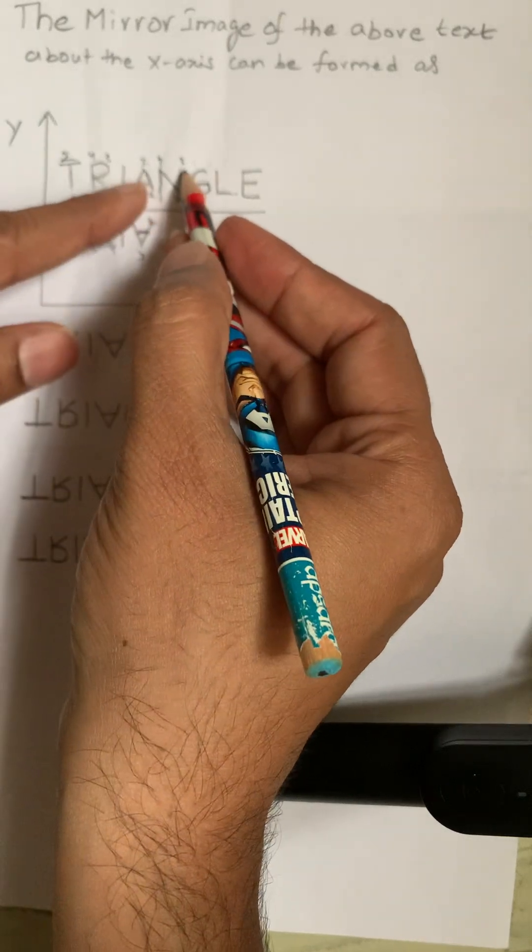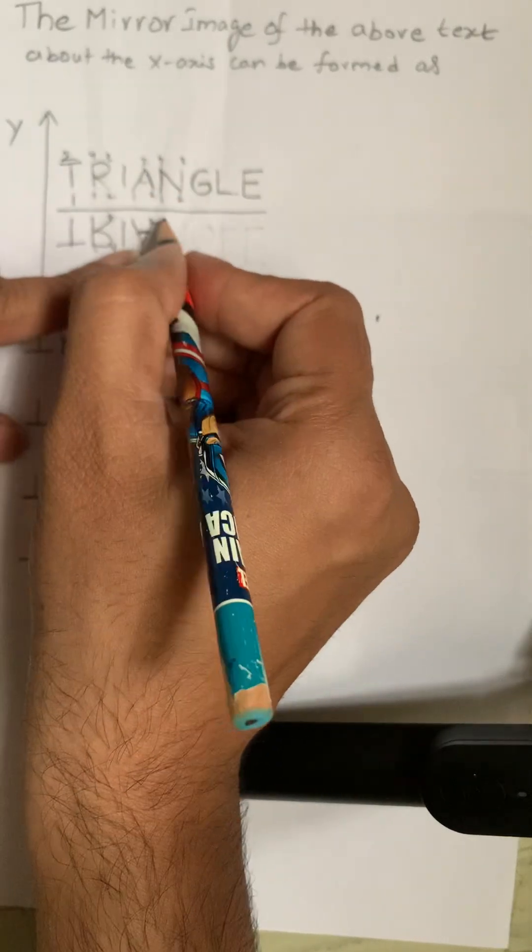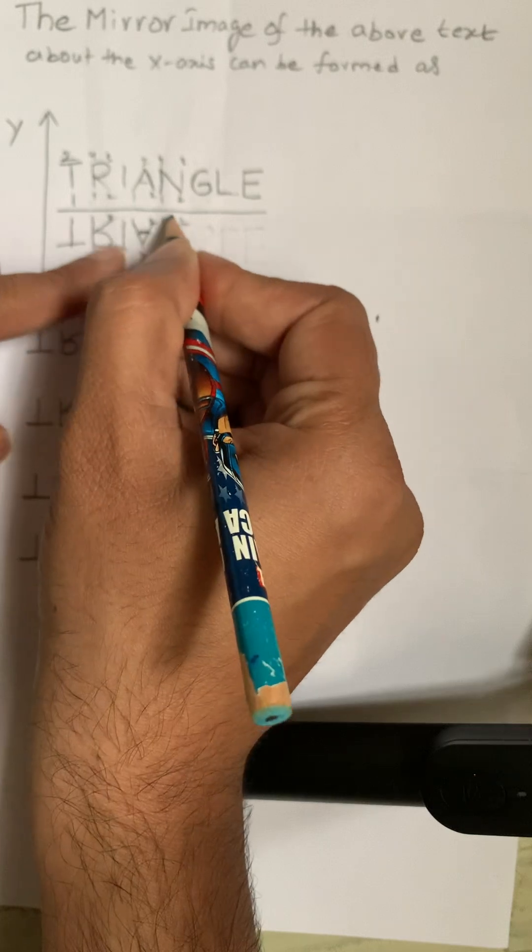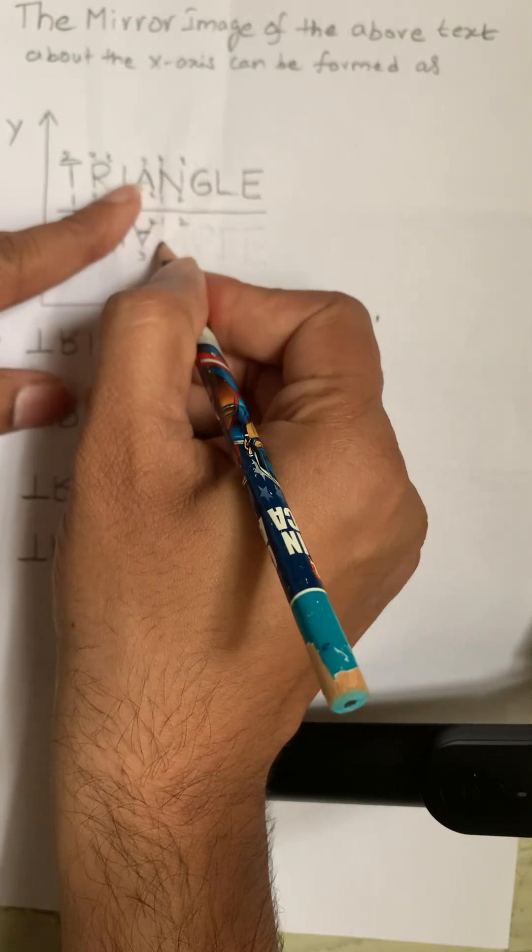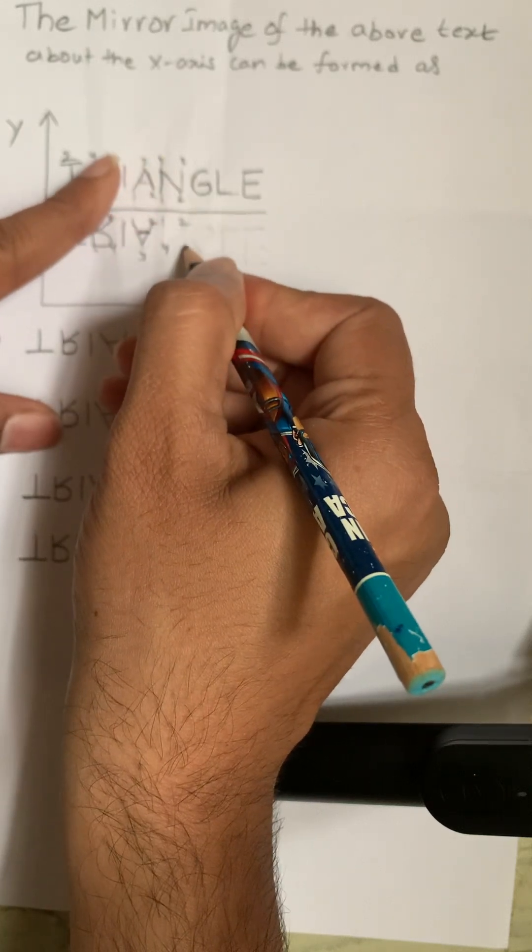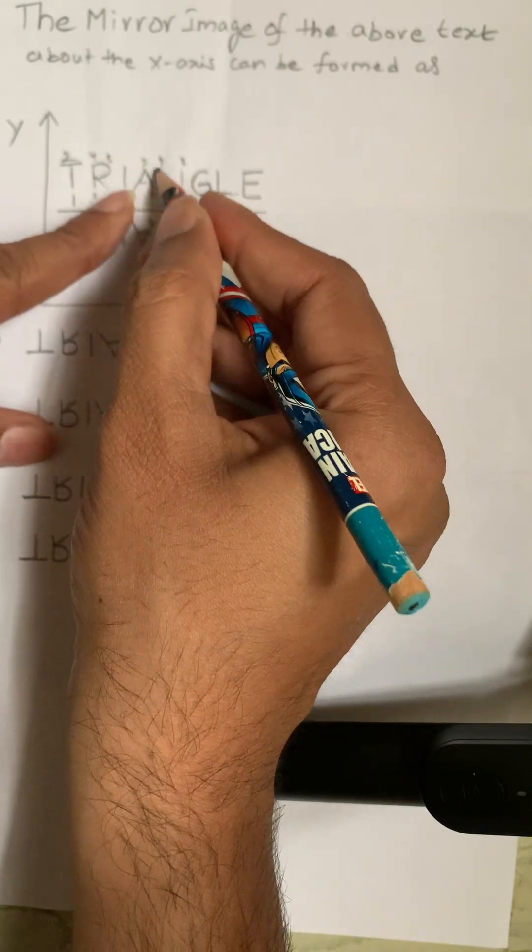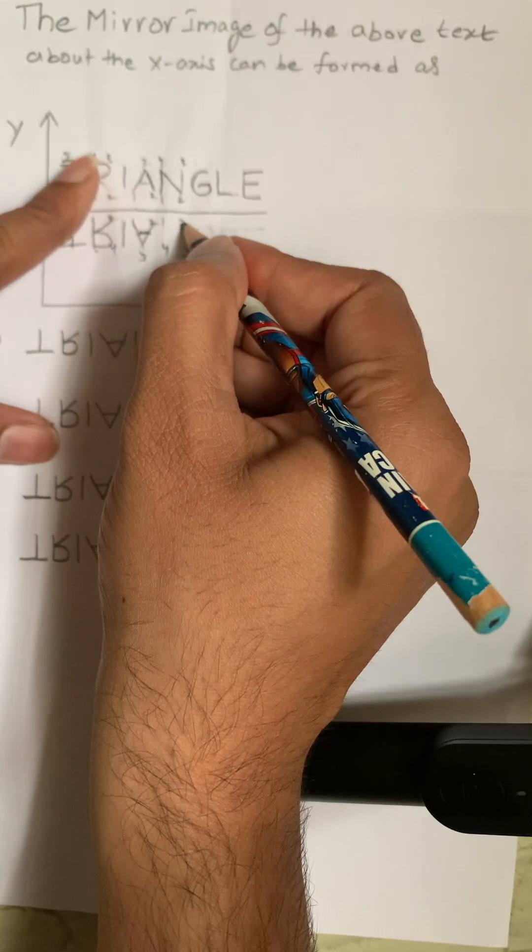When N flips about the x-axis, 1 and 2 remain the same, and this is the mirror. This 4 will appear here and this 3 will appear here. So here 2, 1, 4 - the incline line is joining. First draw the incline line: 1, 4 and 2, 3.